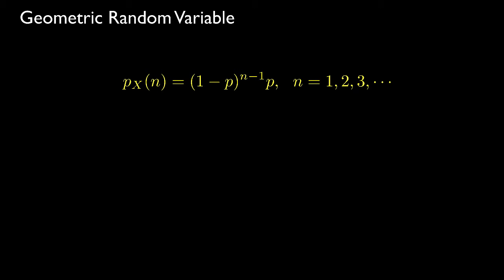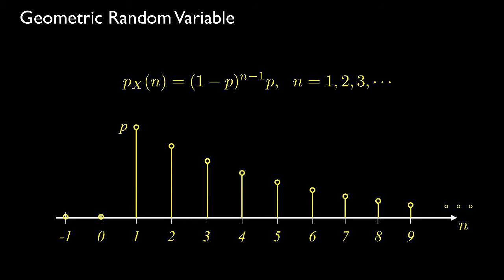A geometric random variable results when we create a sequence of Bernoulli random variables and count the number of trials needed to attain the first success. For the random variable to equal n, we need n minus 1 failures followed by one success. Therefore, the probability mass function is 1 minus p raised to the n minus 1 power times p. The range is all positive non-zero integers, and the PMF begins at p with exponential or geometric decay.